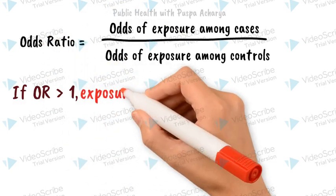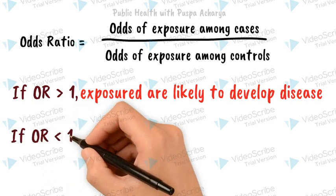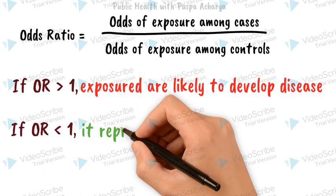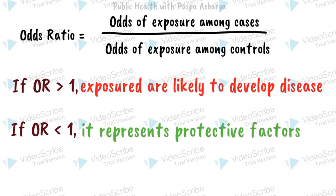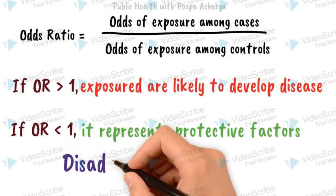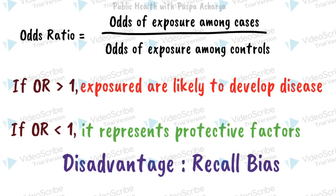If the odds ratio is greater than 1 — for example, 8 — exposure subjects are 8 times more likely to develop disease than non-exposed ones. If the odds ratio is less than 1, it represents protective factors. However, recall bias is a major disadvantage of case-control studies, and selection of an appropriate control group is necessary when conducting a case-control study.